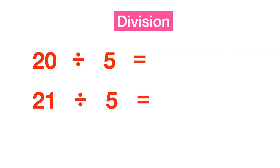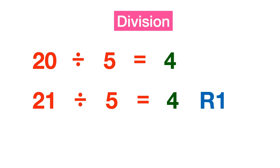When 20 is divided by 5, 5 goes into 20 four times — so 4 divisions are completed fully. Since 21 minus 20 equals 1, there is a remainder of 1. So the quotient is 4 and the remainder is 1.